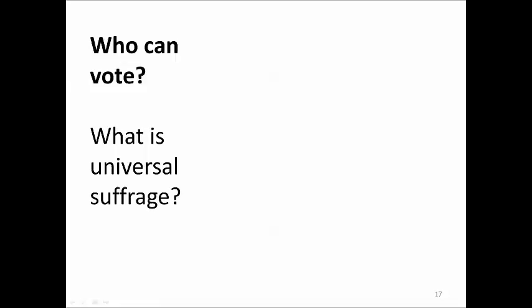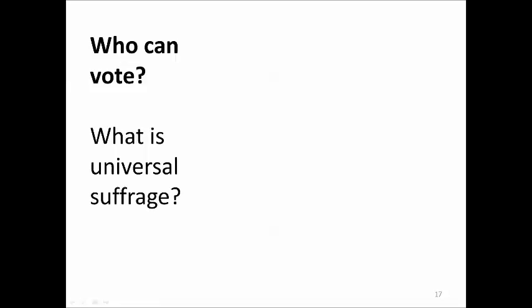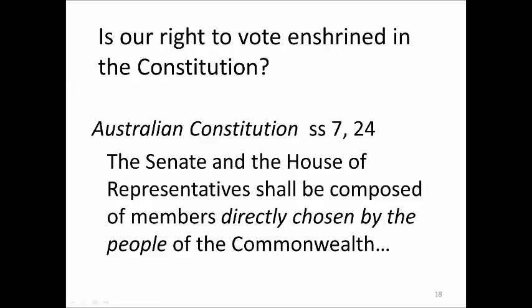Indigenous Australians weren't given the right to vote in Queensland until 1965. When we think about those dates — women in Queensland couldn't vote until 1905 and Indigenous people until 1965 — one might ask: don't we have constitutional rights to vote? Well, largely no. The Australian Constitution's voting component is expressed in very broad terms: that the Senate and House of Reps shall be composed of members directly chosen by people of the Commonwealth. The High Court has had to examine those clauses from time to time to flesh out what they mean.